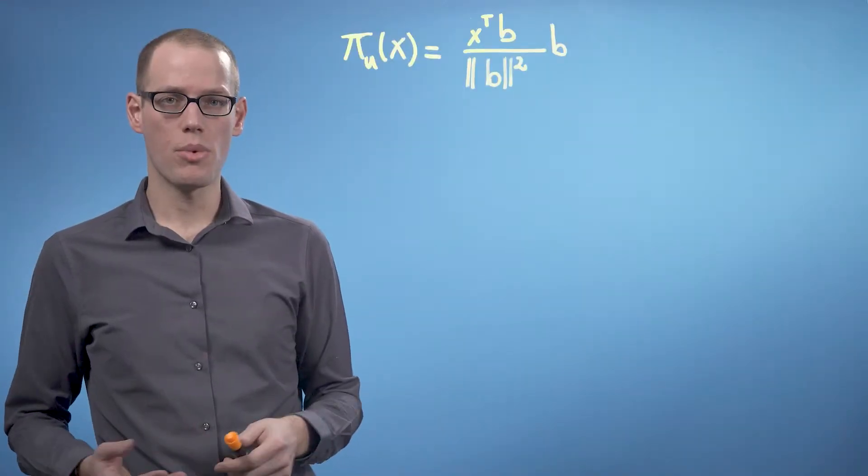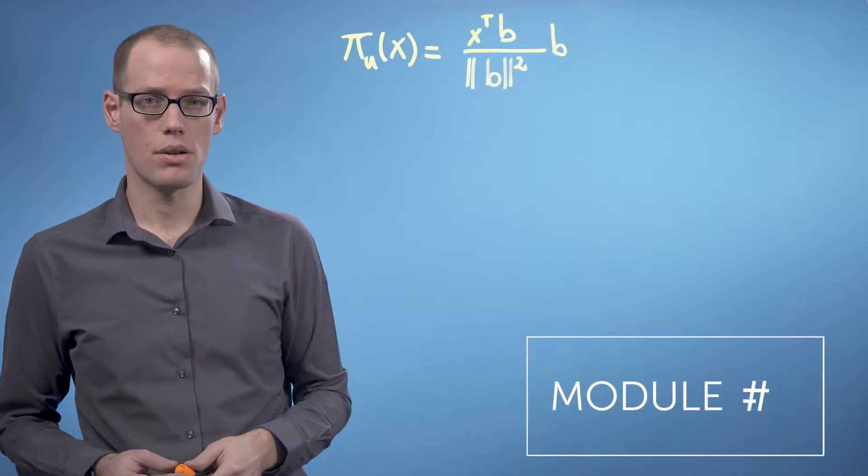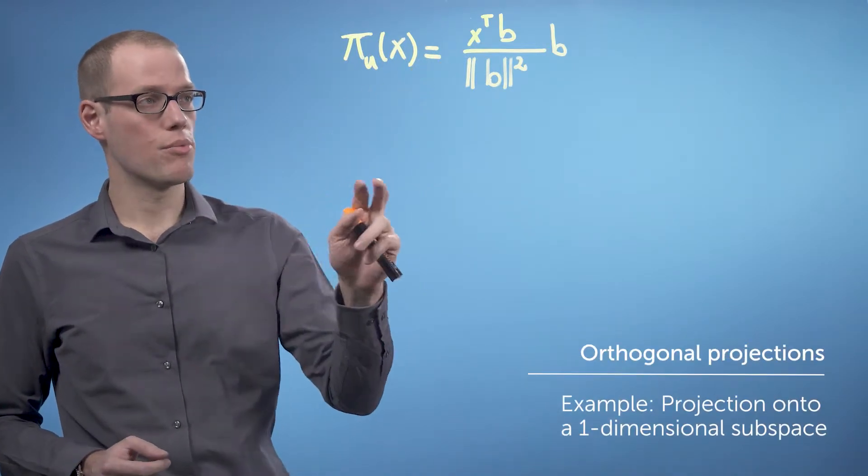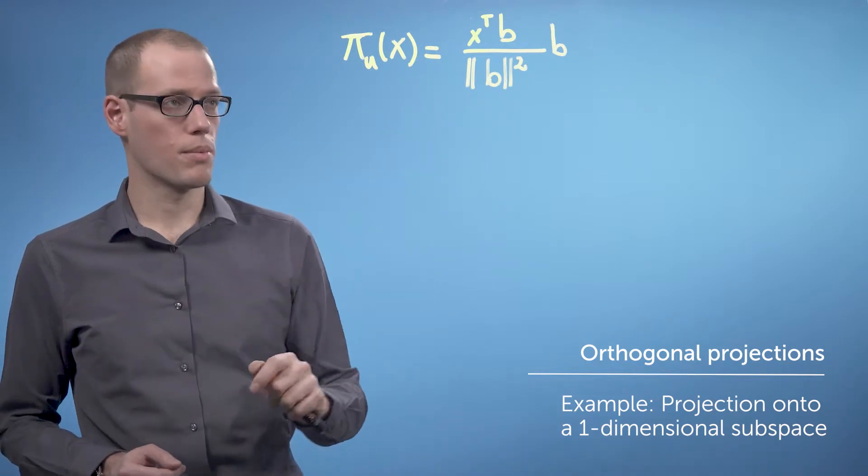In the last video, we derived the formula for projections of vectors onto a one-dimensional subspace. In particular, we arrive at this equation if we choose the dot product as the inner product.